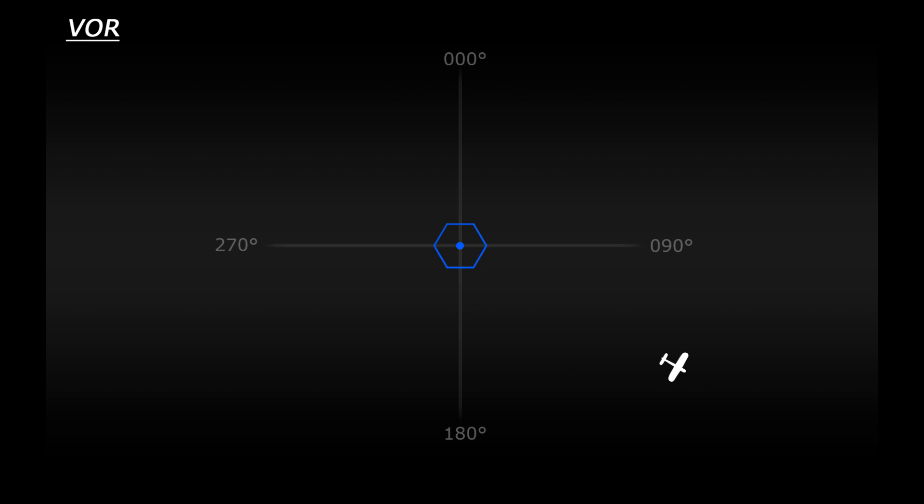One thing to note: the bearing that we get when dealing with VOR navigation is known as a radial. So in this example, the aircraft is on a radial of 120 degrees from the VOR station.